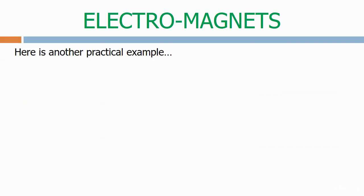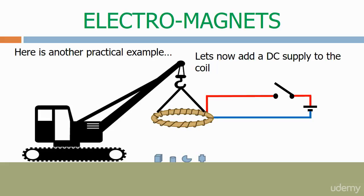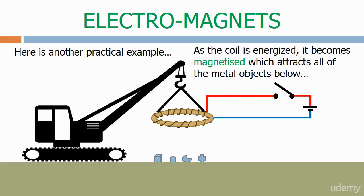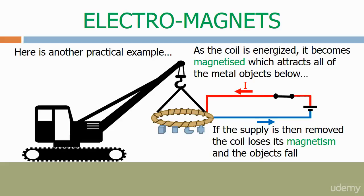Here's another practical example. Here we have a crane with a coil attached on a boom. These devices are used in scrap yards throughout the country. Let's now add a DC supply to the coil. Here we have a standard DC circuit with a switch. As the coil is energised it becomes magnetised, which attracts all of the metal objects below. If the supply is then removed the coil loses its magnetism and the objects fall.